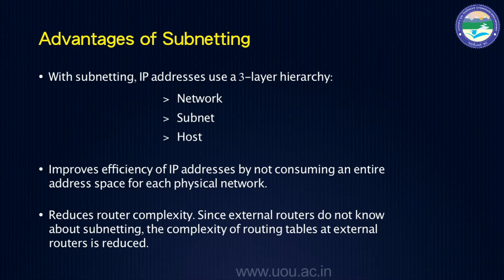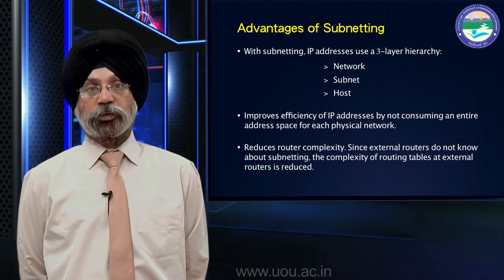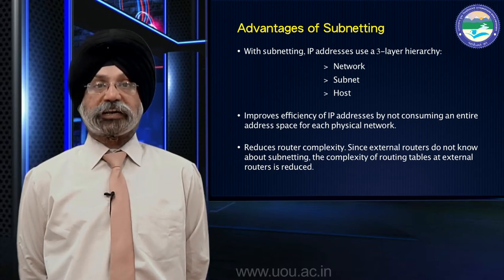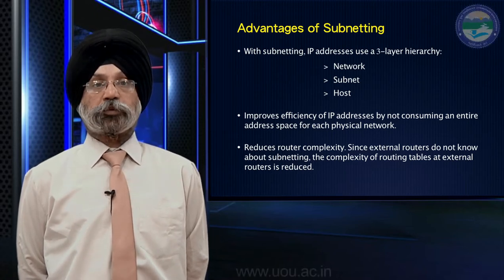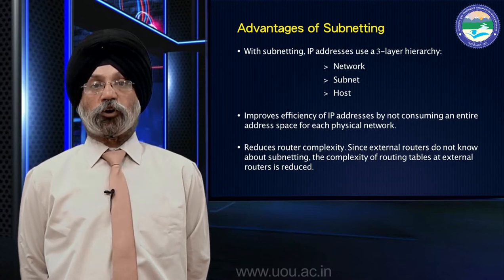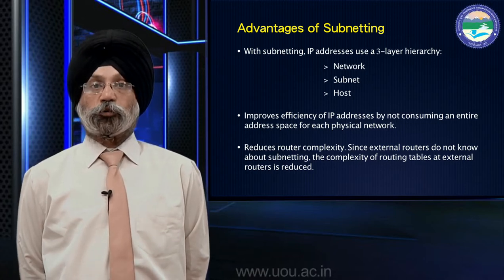Since the external routers do not know about the internal subnetting, the complexity of routing tables in external routers is reduced. Without subnetting, routers would have to have entries for the entire network in the routing table. Whereas with subnetting, a major route entry suffices, and the organization's internal router handles addressing the rest of the hosts.